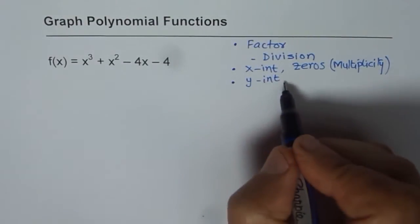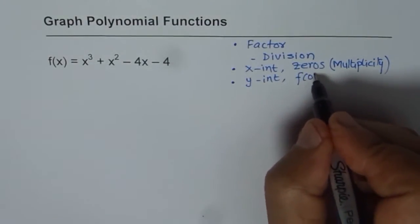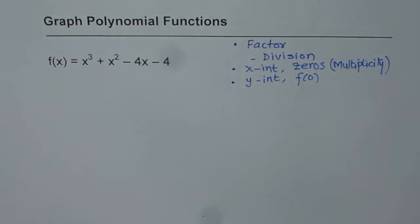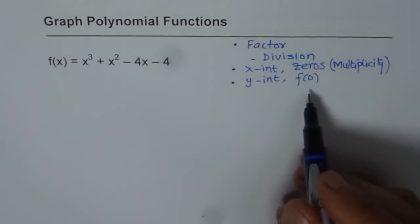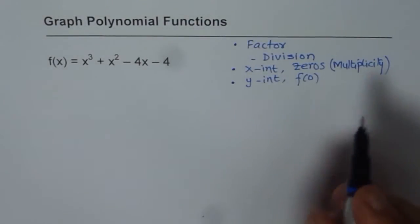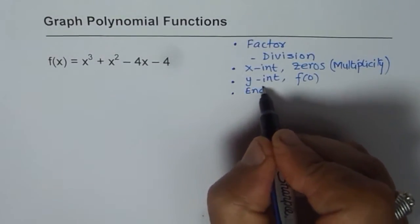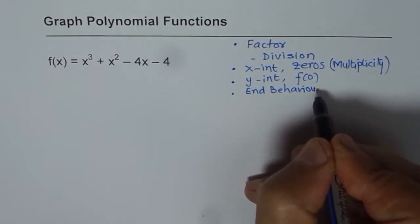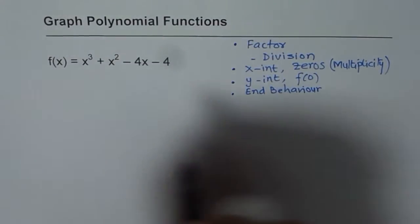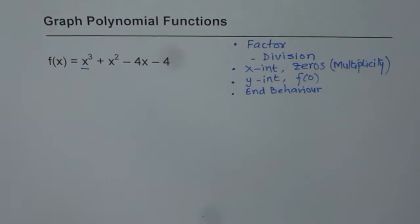Y-intercept is when x is zero. Find the value of the function at x equals zero. So these are important things to start with. And last and most important is end behavior. End behavior is determined by the leading coefficient. These are the steps which we will follow and sketch our graph.